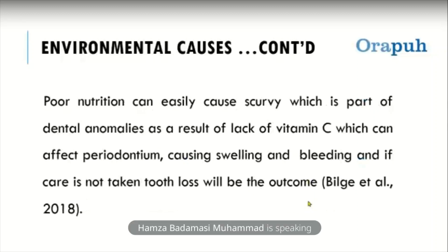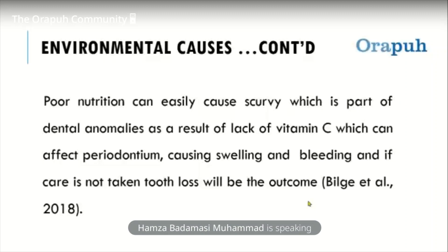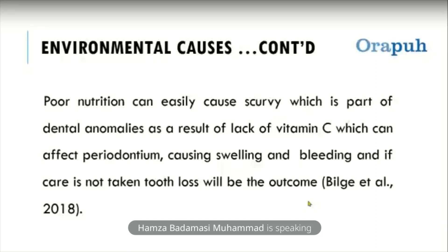Poor nutrition can easily cause scurvy, which is part of dental abnormalities resulting from a lack of vitamin C. This can affect the periodontium, which is the supporting structures of the teeth. Once these supporting structures are affected, it can cause swelling and bleeding, which may eventually lead to loss of the tooth or teeth if proper treatment is not given in time.